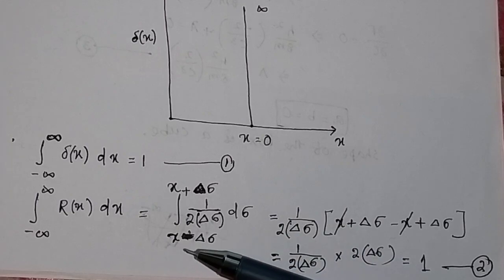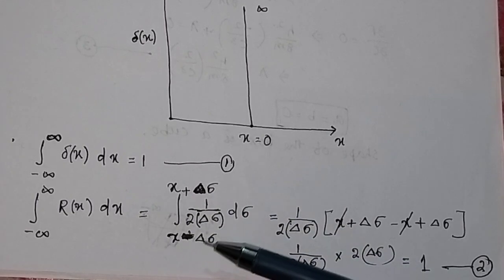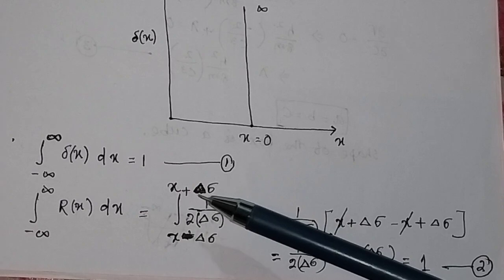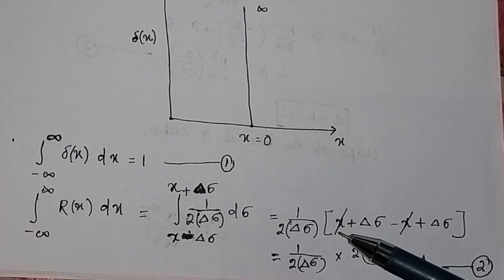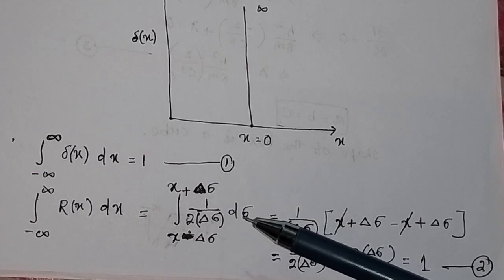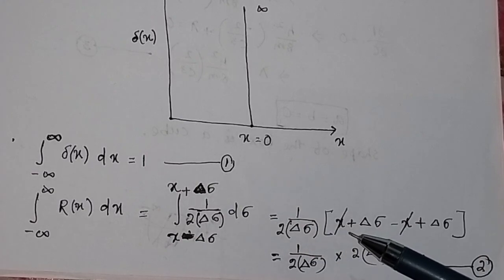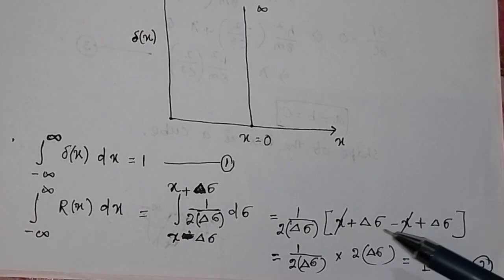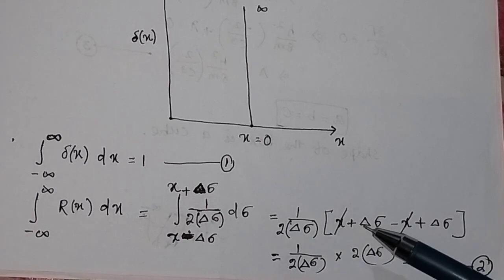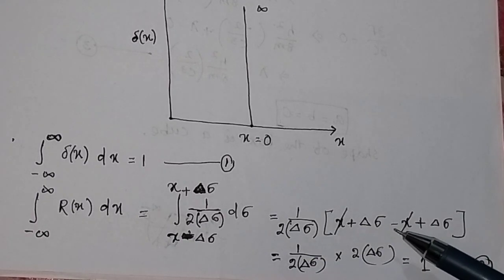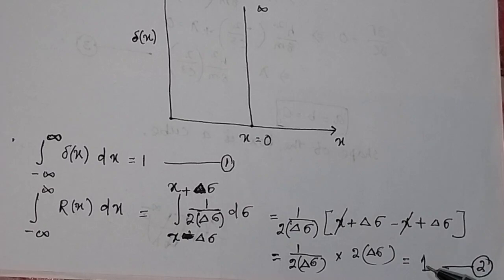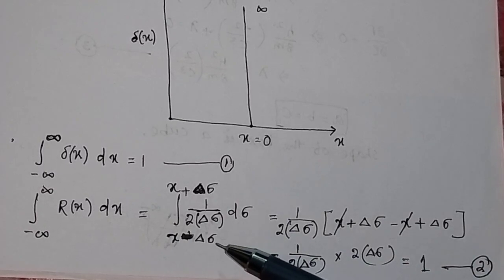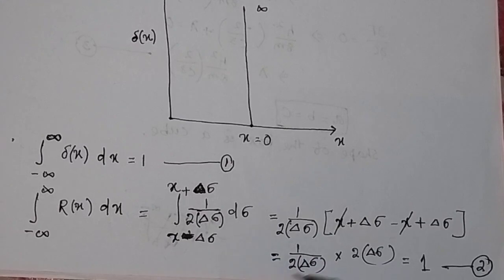We take the limits of integration from x minus Δσ to x plus Δσ. Integrating dσ gives σ, and putting in the upper minus lower limits: (x plus Δσ) minus (x minus Δσ). The x terms cancel, giving 2·Δσ in the numerator, divided by 2·Δσ. So the answer equals 1. In this way, we can prove the identity taken from the Dirac delta function.